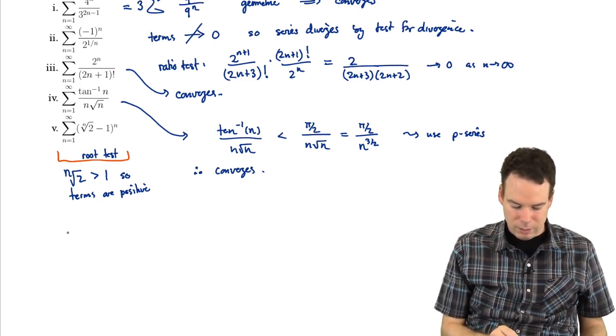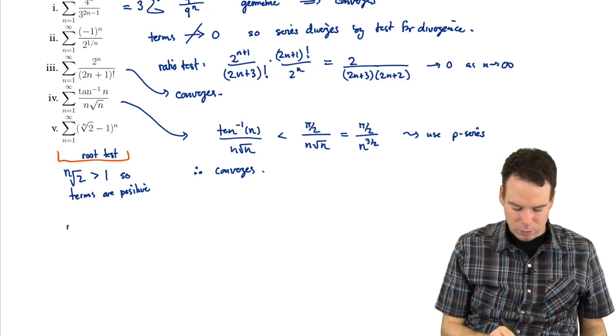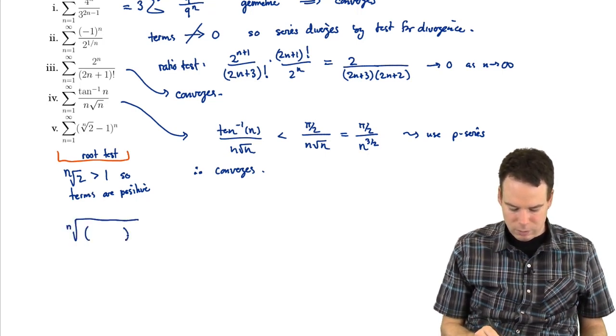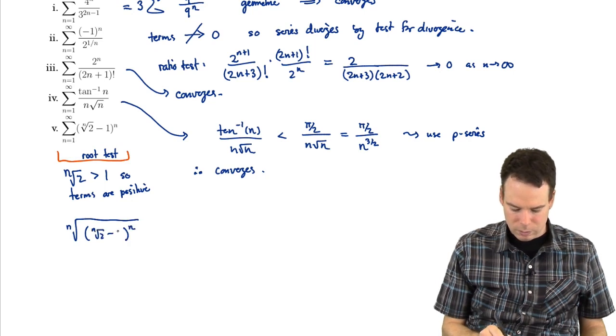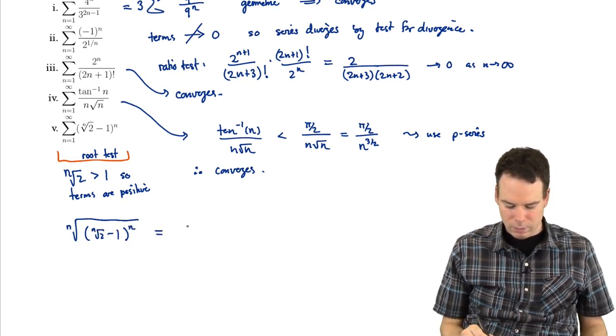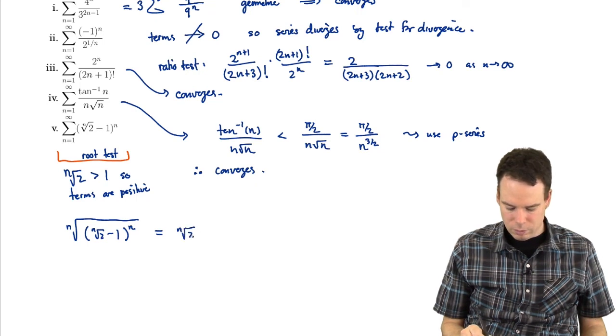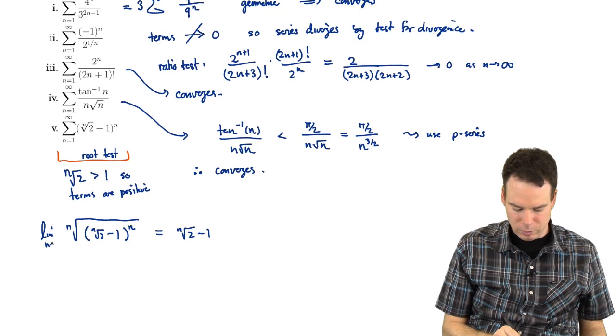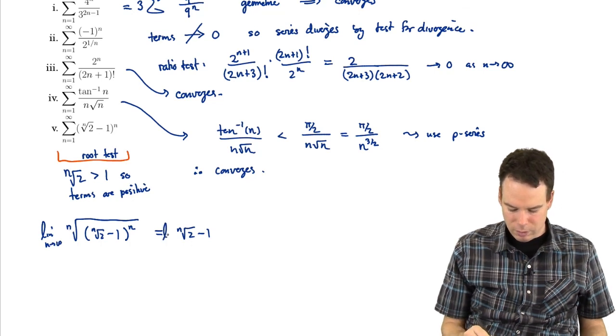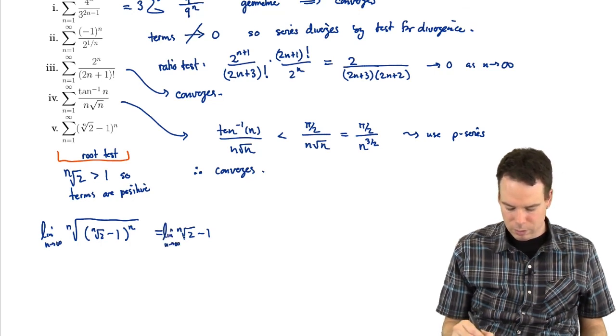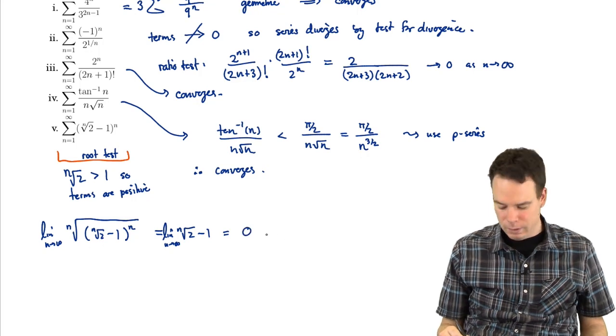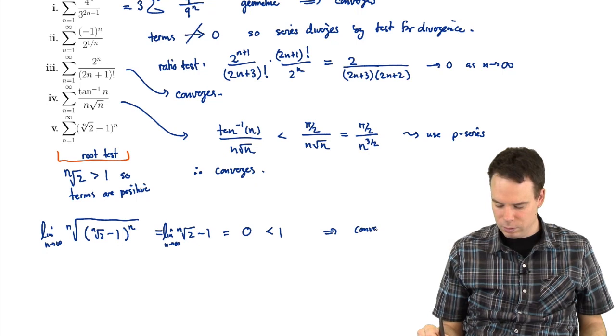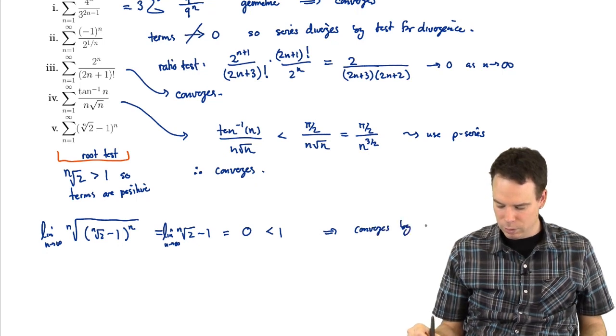So what's the root test say? It says take the nth root of your nth term. And that's going to be then just the nth root of 2 minus 1. So we're going to look at the limit as n goes to infinity of the nth root of the nth term. And that's equal to 0. And that's smaller than 1. So it converges by the root test.